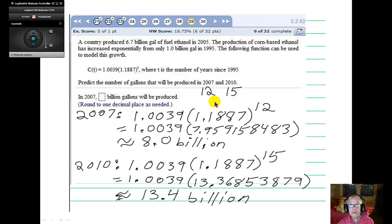2007 would be year 12, and 2010 would be year 15. We're being asked to calculate the amount of fuel ethanol produced 12 years after 1995 and 15 years after 1995. All right, so in 2007, I used these numbers, I used order of operations, and I come up with 8 billion gallons of ethanol fuel. In 2010, I used order of operations, raising 1.1887 to the 15th power, then multiplying by 1.0039, and I come up with 13.4 billion gallons of ethanol.